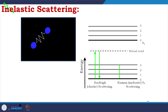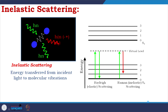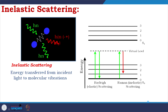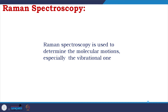The incident ray undergoes mostly elastic Rayleigh scattering, but there is another component with a small difference in energy — this is inelastic or Raman scattering, representing energy transfer from incident light to the molecular vibration. Raman spectroscopy is used to determine molecular motions, especially the vibrational modes of motion.